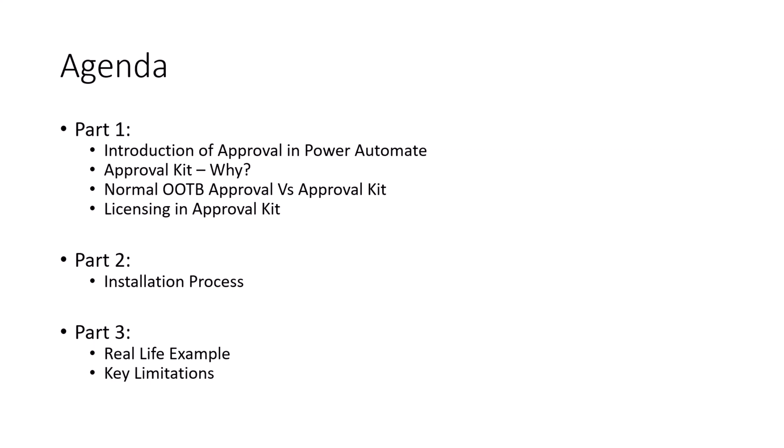In the second episode we will be talking about how we can get started with Power Automate Approval Kit. We will talk about the installation steps in depth. I will show a step-by-step process for downloading the package and installing that into the environment, and how best you can configure all your flows and custom connectors.